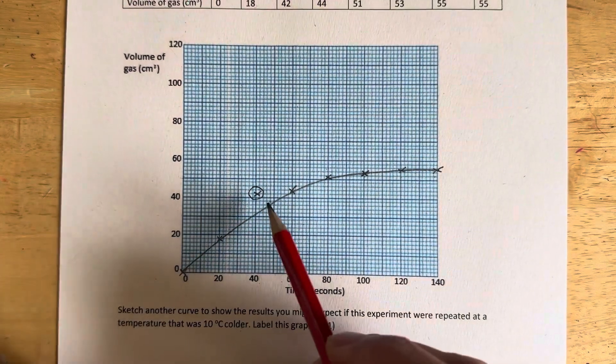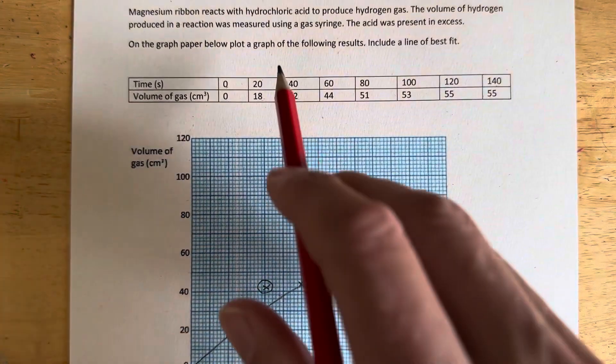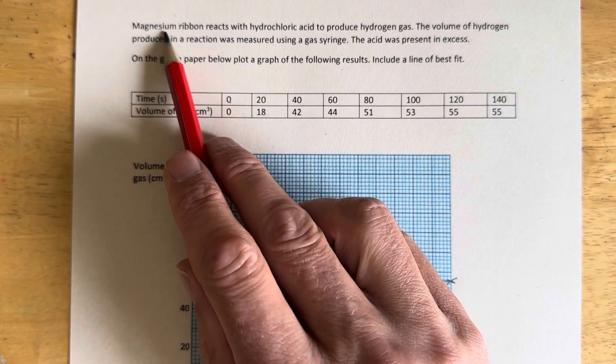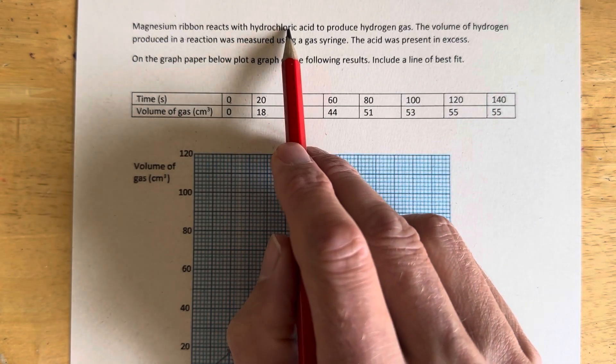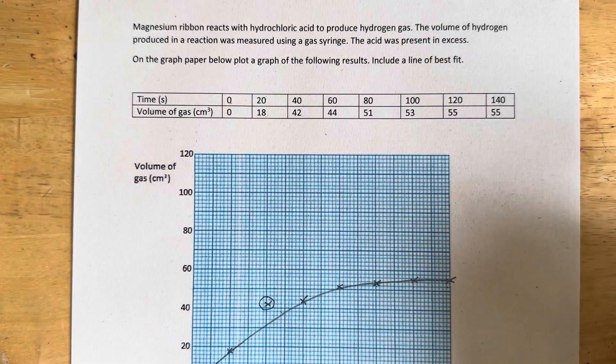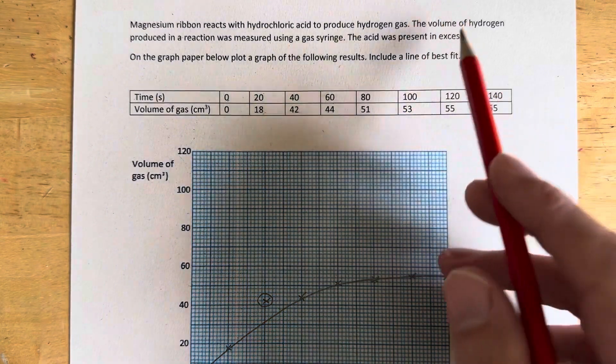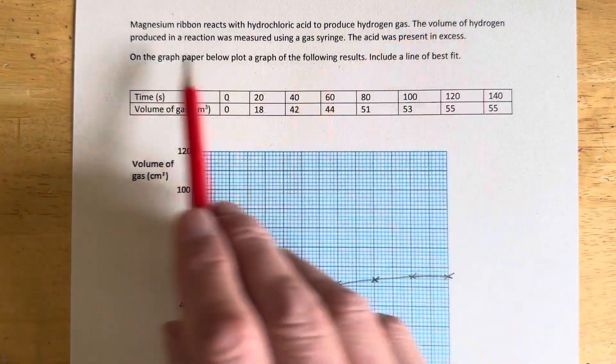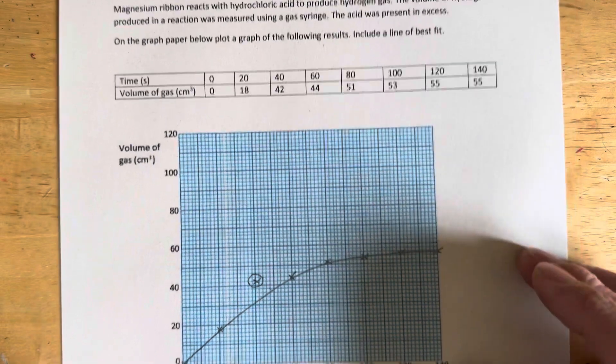This graph in the previous question was about, let's just remind ourselves, magnesium reacting with hydrochloric acid with the acid being in excess. It's going to produce hydrogen gas, and the volume of hydrogen is being measured with a gas syringe.